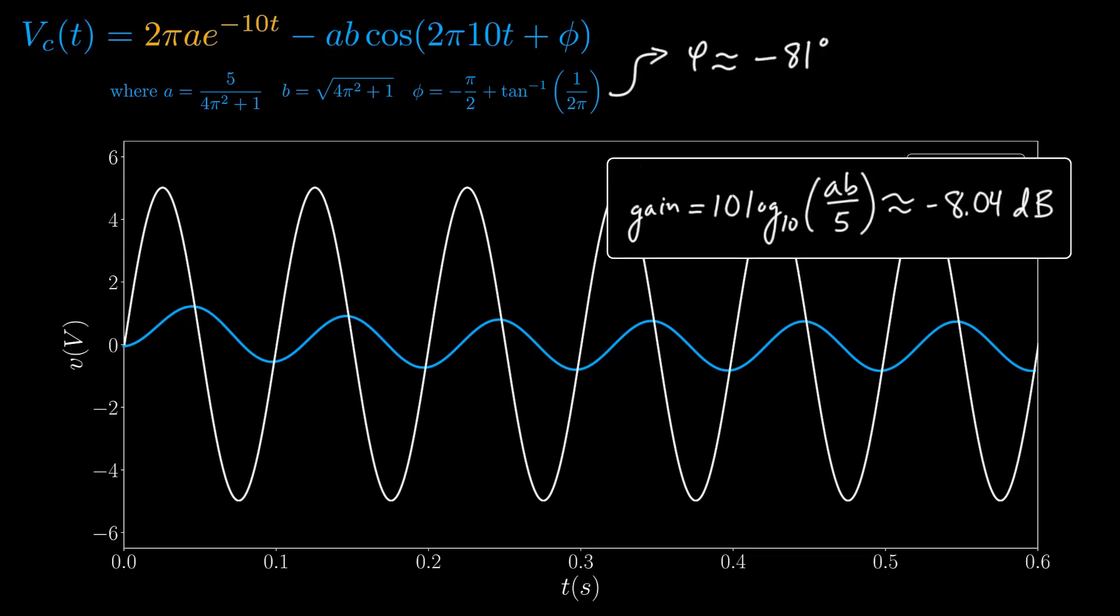Notice that the phase and gain are calculated only from the periodic term in the solution. We ignore the transient term when computing the gain and phase because it has no effect on the long-term behavior of the system. This exponential decay transient is particularly short-lived, affecting only the first couple of cycles.